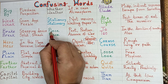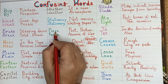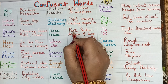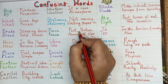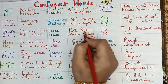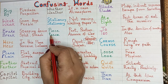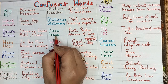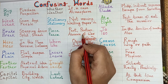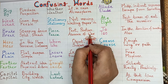P-I-E-C-E — piece means part or portion. P-E-A-C-E — peace means absence of war.